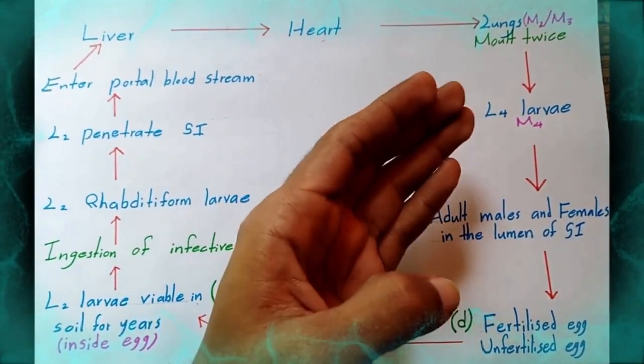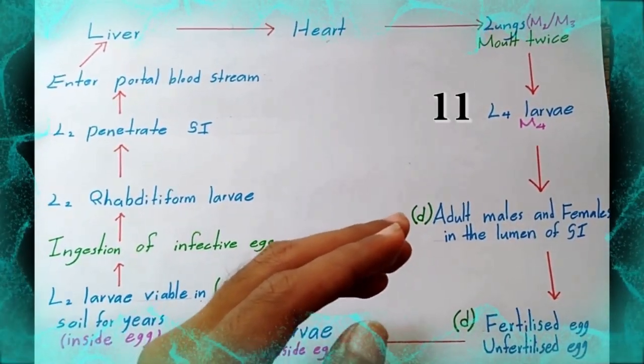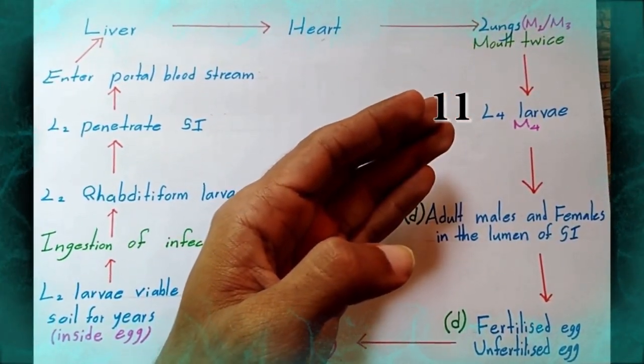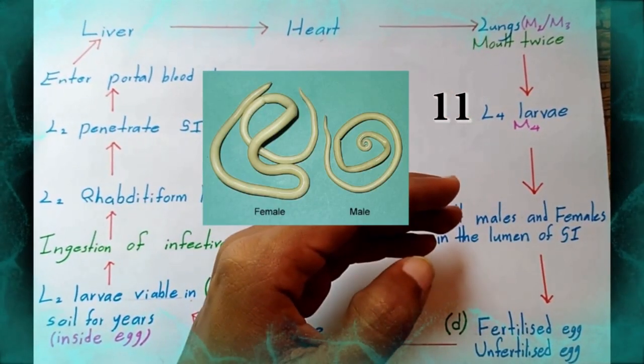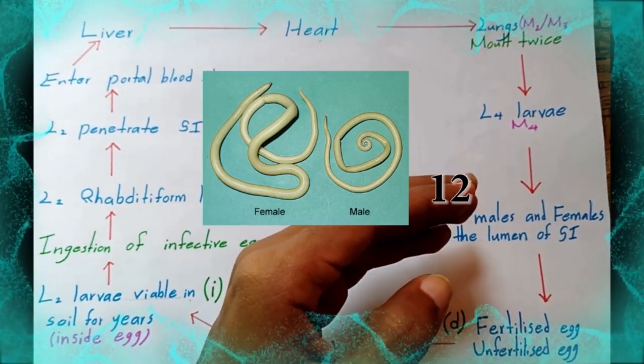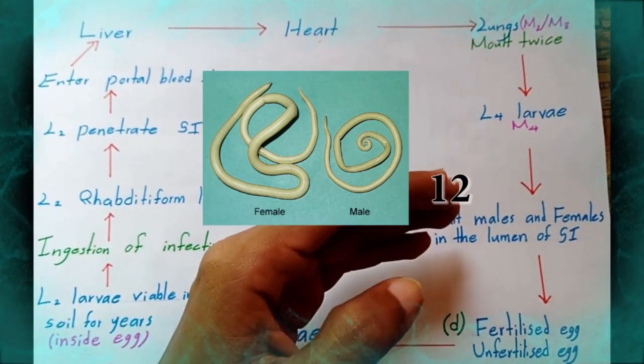After molting, the larvae become L2 larvae, which then develop into adult male and female worms in the small intestine.